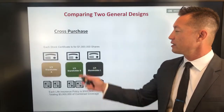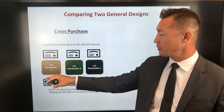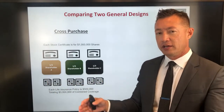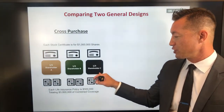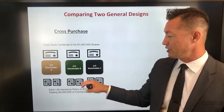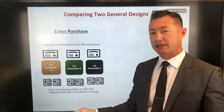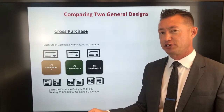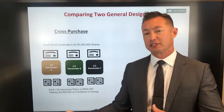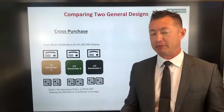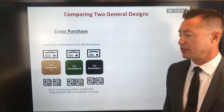A cross-purchase plan is where shareholders own insurance policies on each other to fund the buyout. In this example with three shareholders, you need six policies essentially to buy one shareholder out. The benefit of that type of plan is you get a step-up in basis for the shares you purchase, because you're using your own personal dollars, not corporate dollars. The downside is there's no corporate oversight, so somebody might not be making the premium payments and the plan falls apart, unless they have some kind of mandated check-in.